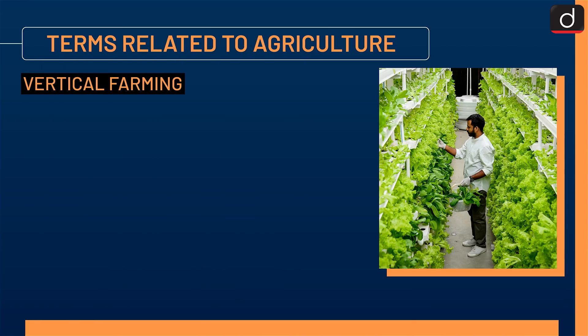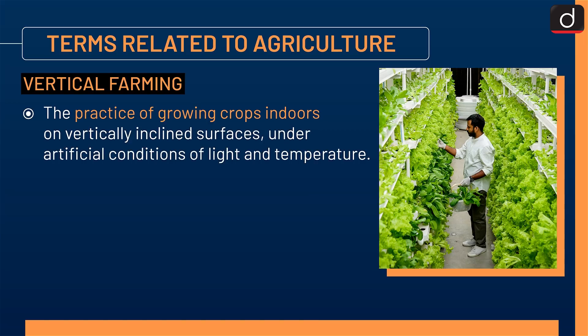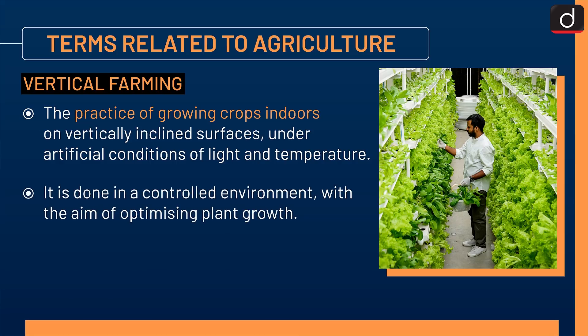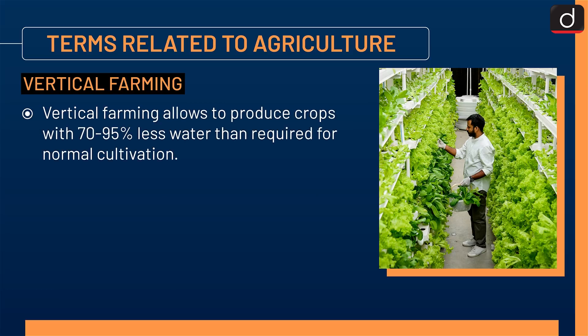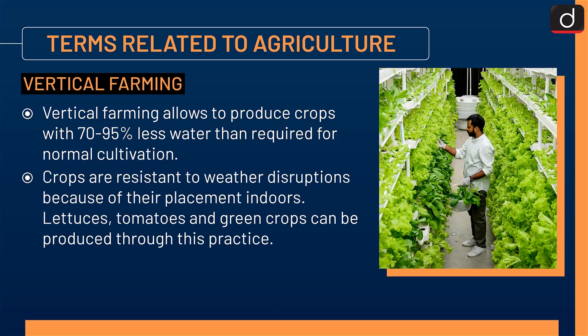Next is Vertical Farming. Vertical farming is the practice of growing crops indoors on vertically inclined surfaces, under artificial conditions of light and temperature, in a controlled environment with the aim of optimizing plant growth. It aims at higher productivity in smaller spaces and uses soil-less methods such as hydroponics, aquaponics, and aeroponics. Vertical farming allows crops to be produced with 70–95% less water than required for normal cultivation, and crops are resistant to weather disruptions because of their indoor placement. Lettuces, tomatoes, and green crops can be produced through this practice.